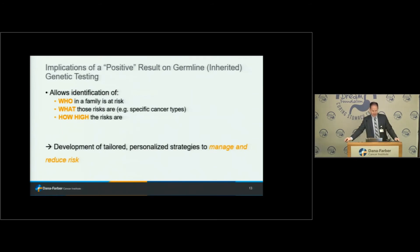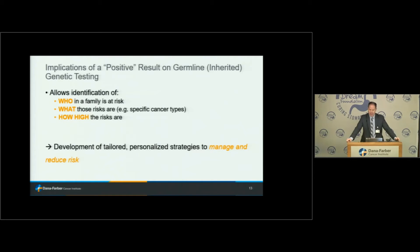When we talk about a positive test on germline genetic testing, once we find it, it allows us to go through the family and identify who has risk, what those risks are — either specific cancer types and how high those risks are. There's some uncertainty, but we can at least start to pin down what this means for that individual and family. Just as importantly, we can develop specific, personalized, tailored strategies to manage and reduce that risk — all in the name of prevention and early detection.